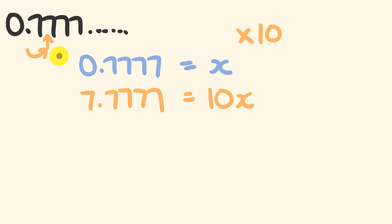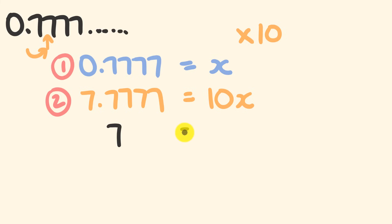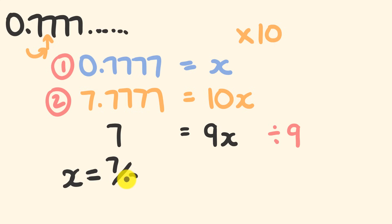So we have two equations: the first equation (x = 0.7777...) and the second (10x = 7.777...). We subtract the first from the second. 7.7777 minus 0.7777 equals 7. This equals 10x minus x, which is 9x. So we have 7 equals 9x. Dividing both sides by 9, we get x equals 7 over 9. That's how you convert a recurring decimal into its equivalent fraction.